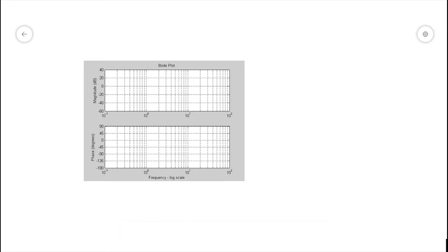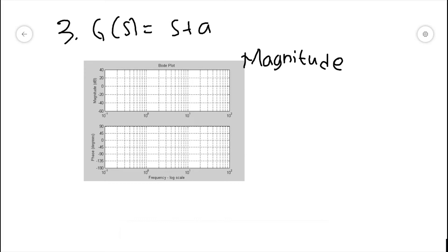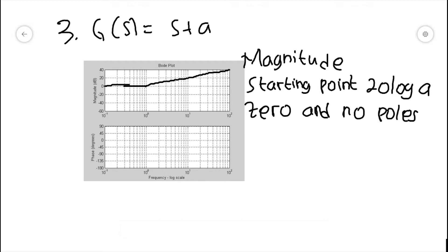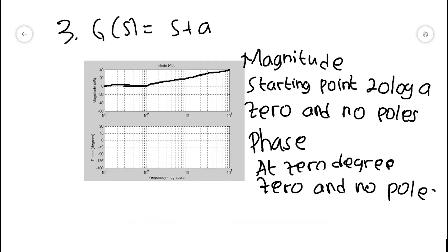The third form is for the transfer function G(s) = s + a — it has a zero at constant a. To find the starting point on the magnitude diagram, 20 times log(a) is used. Since the transfer function only has a zero and no poles, when the frequency hits a — a corner frequency — the plot rises 20 decibels per decade. The plot will look like this. To draw the phase diagram, we start at zero degrees. Since the transfer function has a zero, the plot will rise 90 degrees per two decades from the frequency of 0.1a to 10a, then flatten again. The plot will look like this.